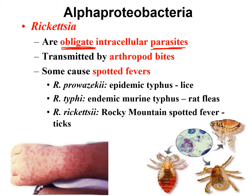Rickettsia is transmitted through the bite of an arthropod. On the bottom right are some different types of arthropods that can be infected with rickettsial bacteria — when they bite you, they transmit the bacteria. If you get infected with Rickettsia, they will cause a spotted fever. The spotting refers to the rash caused on your skin, and they also cause a fever — that's where 'spotted fever' comes from.